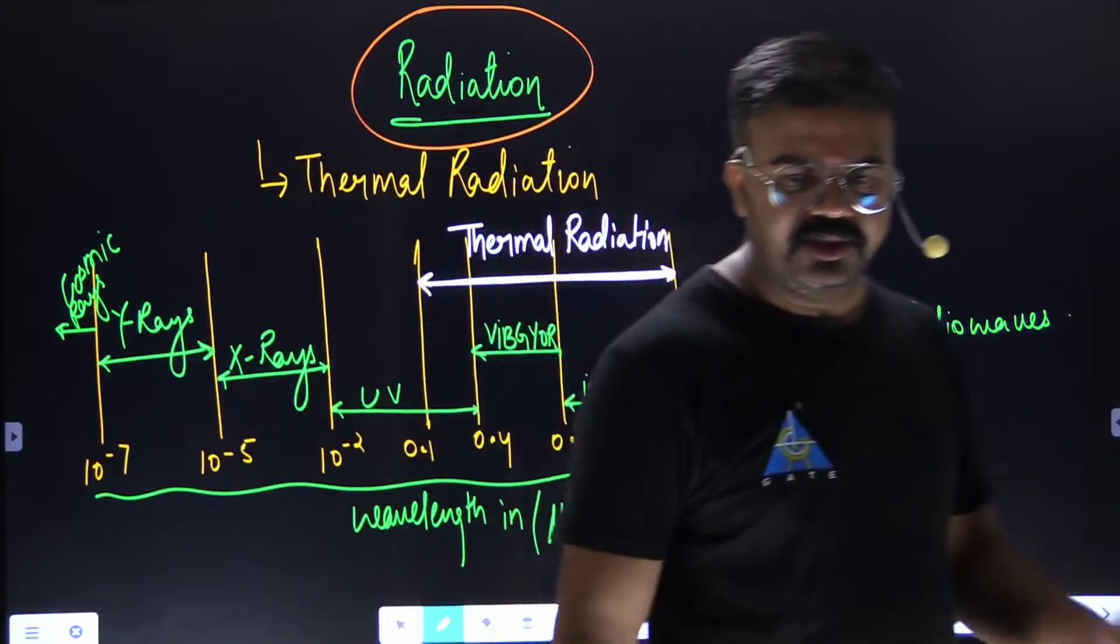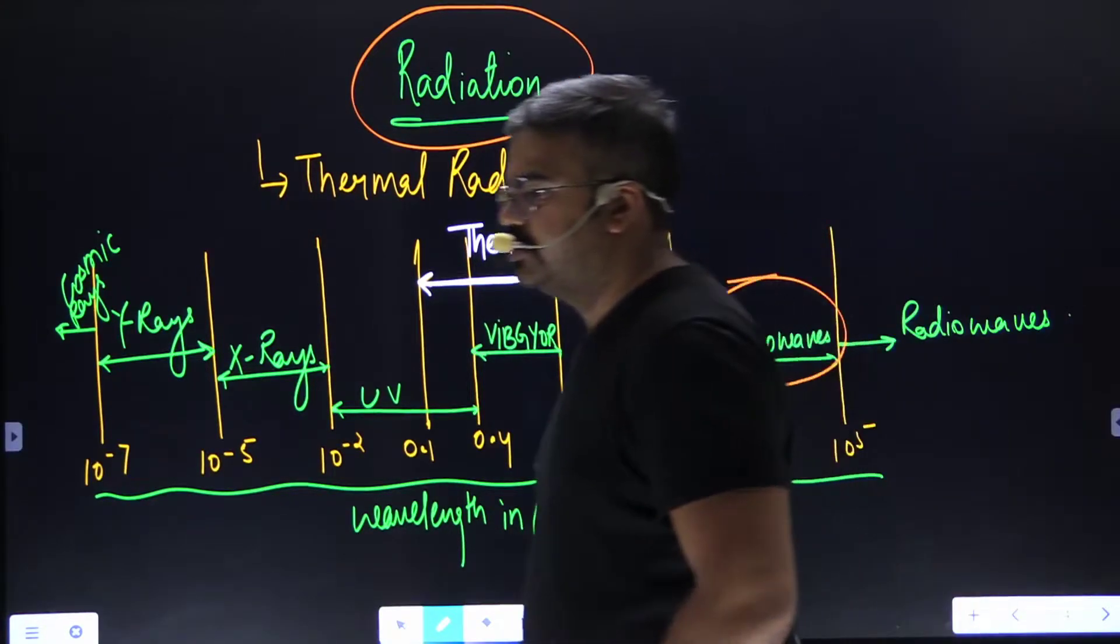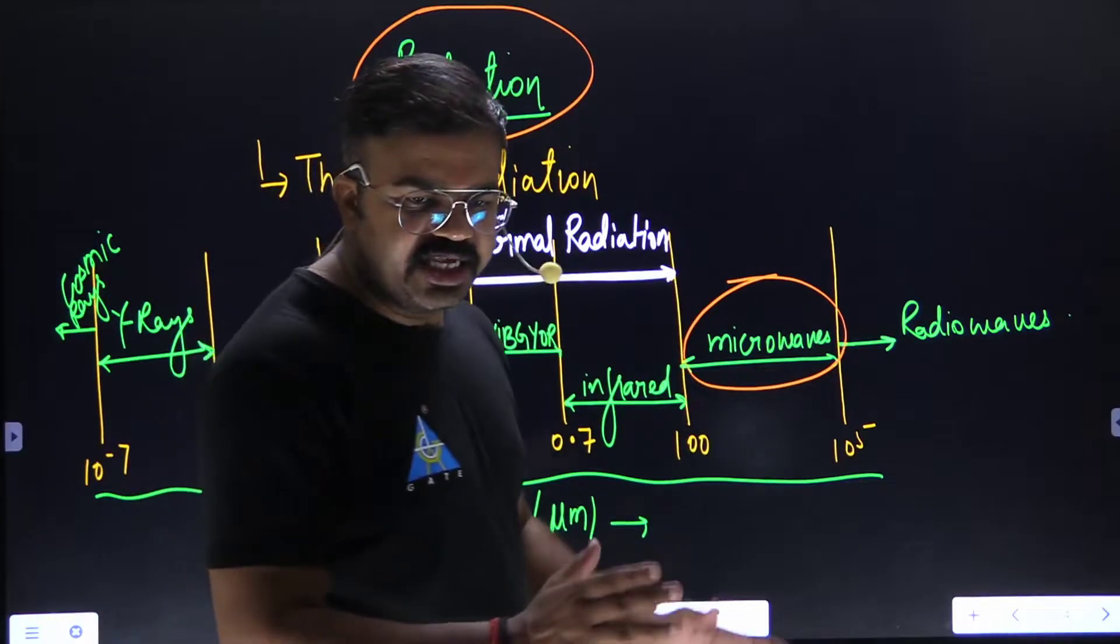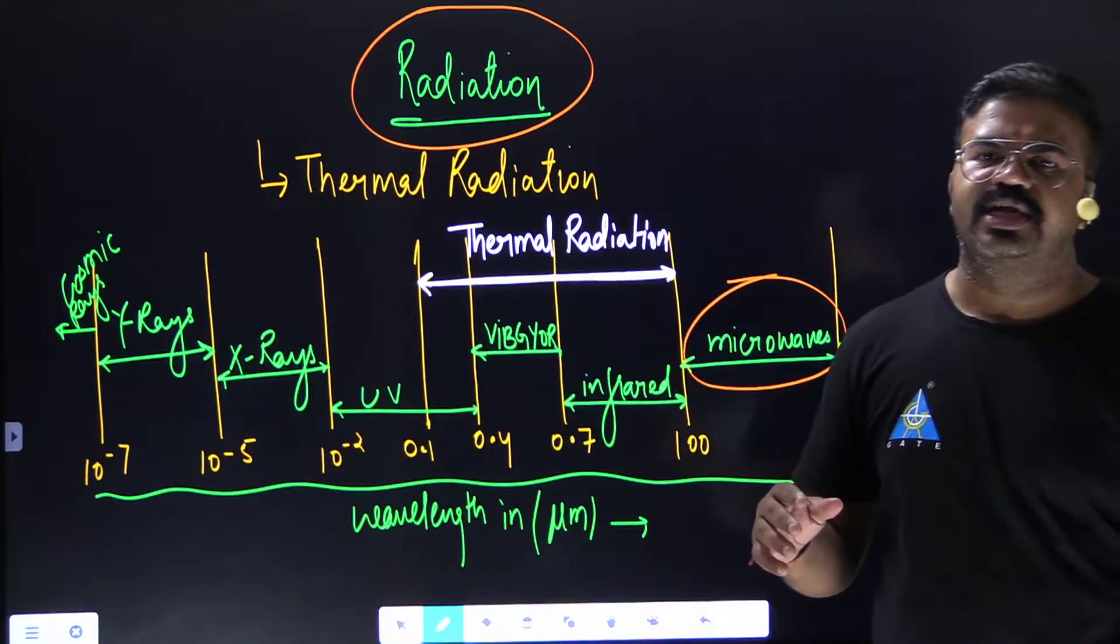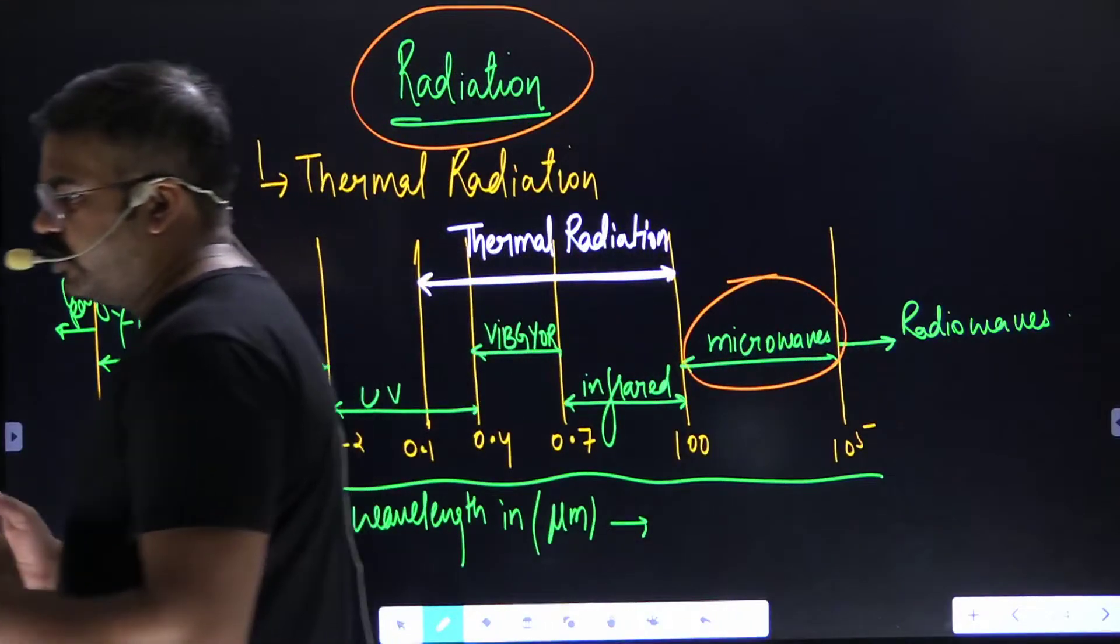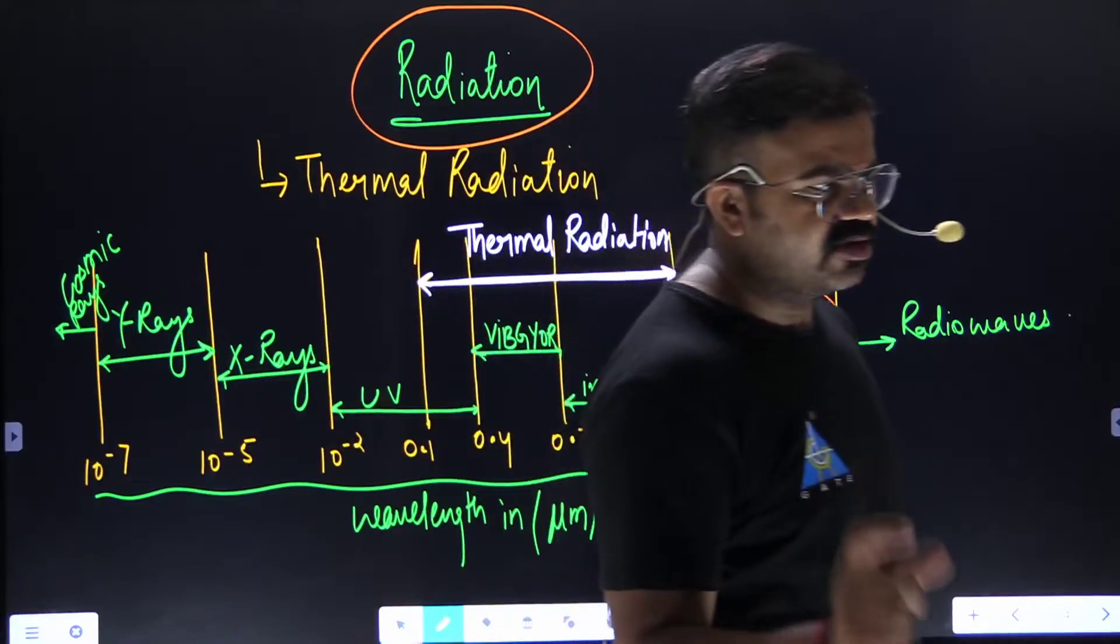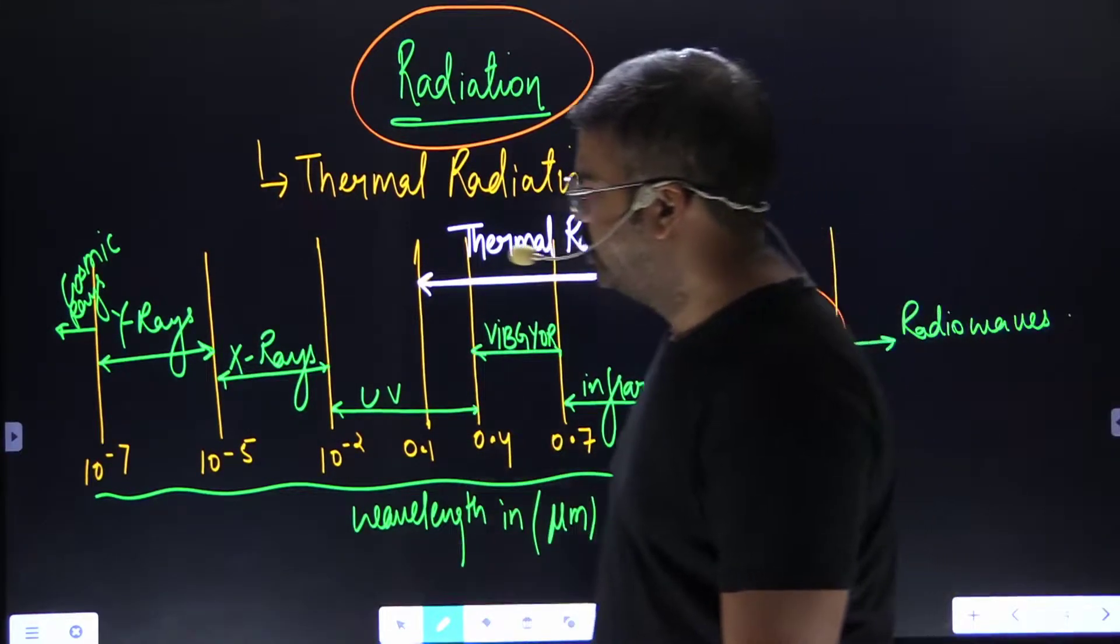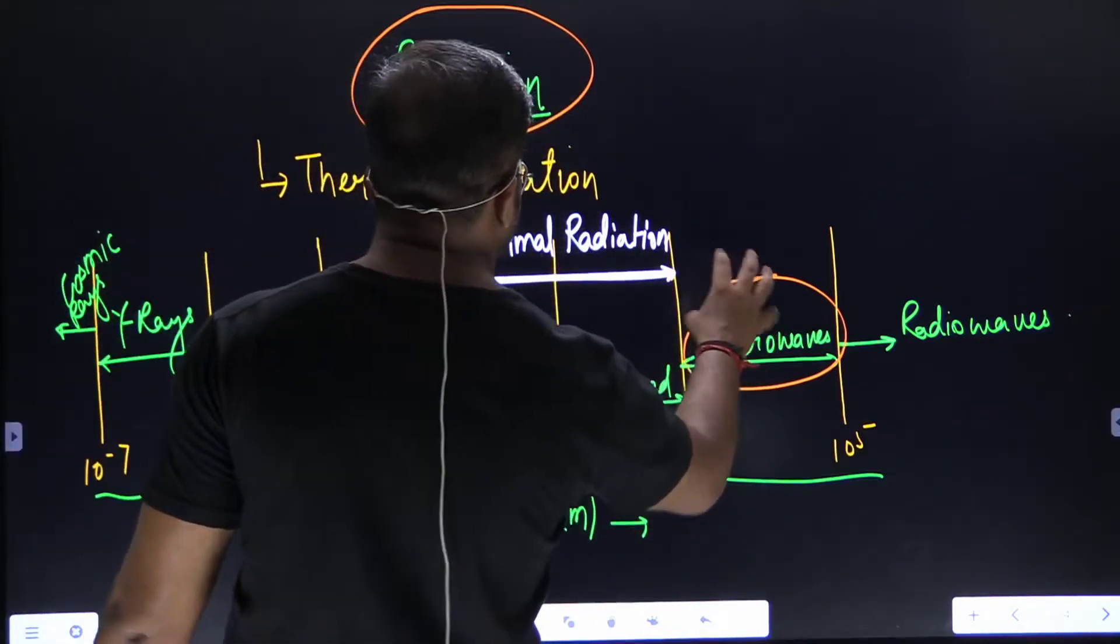But sir, why are you excluding this microwave radiation? That's an interesting question. Because if we see microwave ovens, microwave ovens are used to heat up the food. If food has become cold, what do you do? You put it inside a microwave oven and automatically it starts heating. Temperature is increased, that is observed.